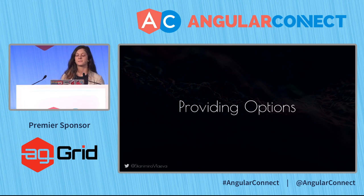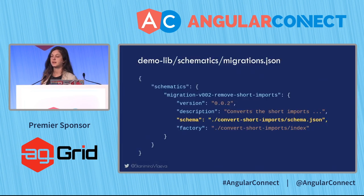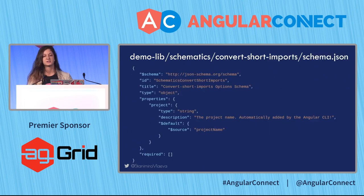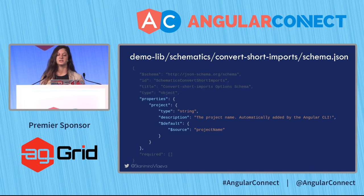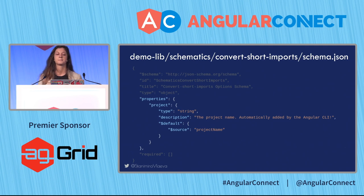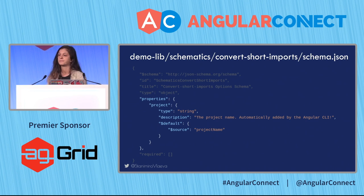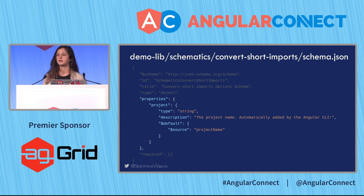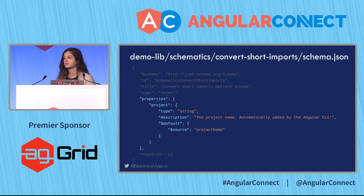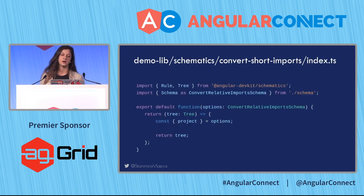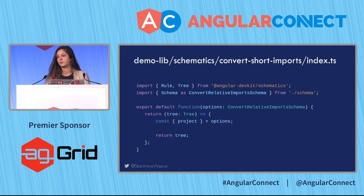How do we provide options to a schematic? We have a schema key inside the migration JSON file, pointing to another schema JSON file. The important thing is the properties object, which contains the different options we can provide. In this case, we have a 'project' option, which is inserted by default by the Angular CLI — it figures out which project you're executing the ng-update in. The options argument is inserted in the outer function and we can access it from the inner rule function.